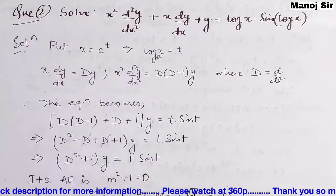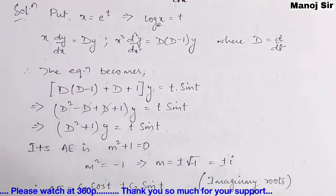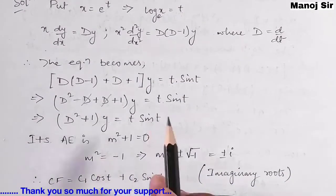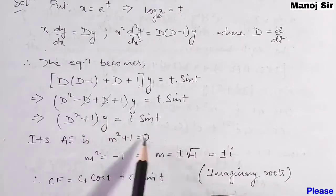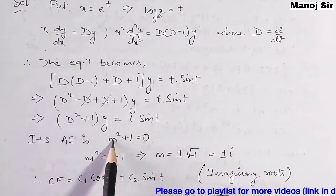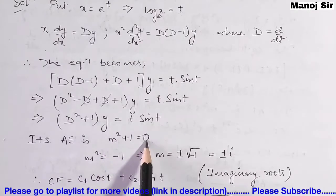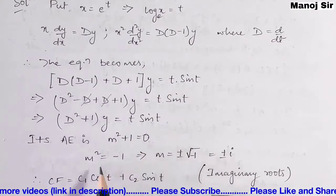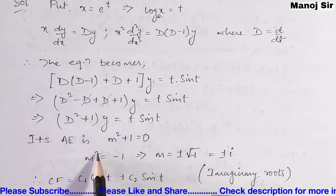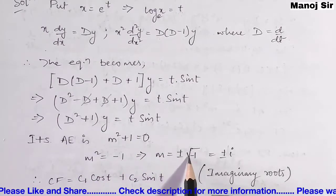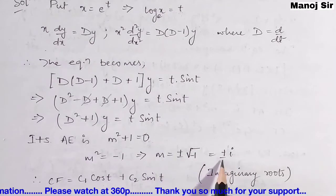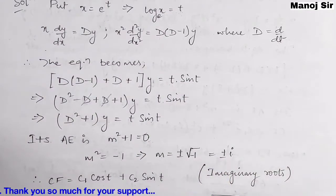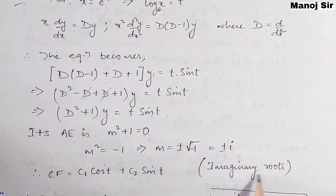After writing this equation in symbolic form, we find the auxiliary equation by equating the coefficient of y to zero. Writing m instead of D: m² + 1 = 0, so m² = −1, giving m = ±i. The roots are imaginary.